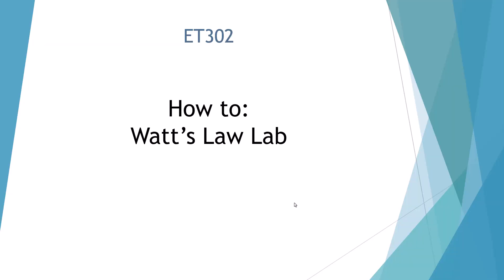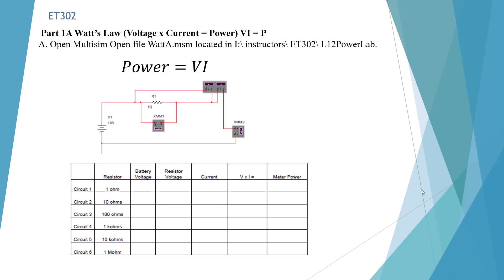Welcome to the ET302 how-to video for Watts Law Lab. Here we are at Part 1A of our Watts Law Lab. We have a circuit with a 10-volt battery, a 1-ohm resistor, and a voltmeter which is going to measure our voltage across our resistor, and an inline ammeter which is going to measure our current.